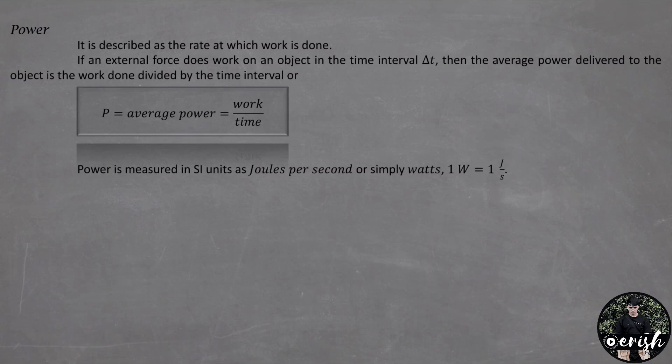Power is measured in SI units as joules per second or simply watts. 1 watt is equal to 1 joule per second. It is also measured in horsepower unit in British system. We have 1 horsepower and this is equivalent to 746 watts.